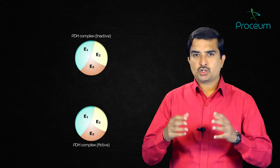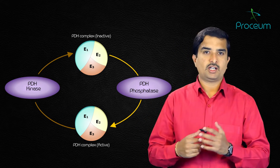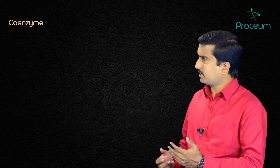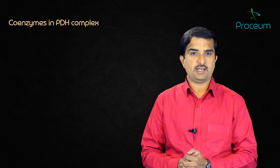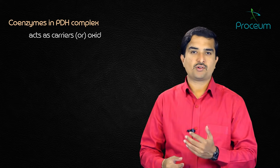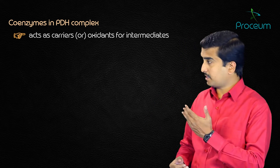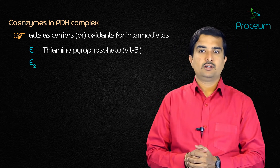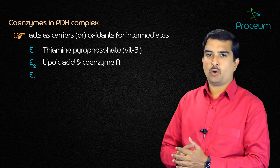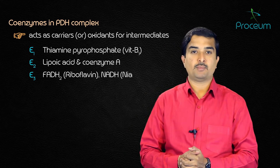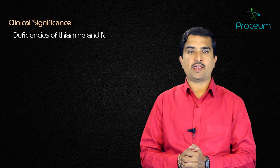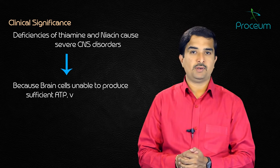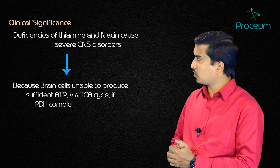The complex also contains two tightly bound regulatory enzymes: pyruvate dehydrogenase kinase and pyruvate dehydrogenase phosphatase. The PDH complex contains five coenzymes acting as carriers or oxidants for reaction intermediates. E1 requires thiamine pyrophosphate (from vitamin B1); E2 requires lipoic acid and coenzyme A; E3 requires FAD (from riboflavin) and NAD⁺ (from niacin). Deficiencies of thiamine or niacin can cause severe central nervous system problems, as brain cells cannot produce sufficient ATP via the citric acid cycle if the PDH complex is inactive.